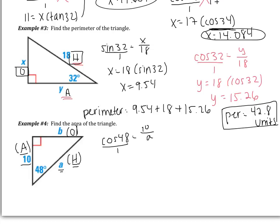And then I put this over 1. I'm going to do my cross products. I get 10 equals A multiplied by cosine of 48. So A is going to be 10 over cosine of 48. In this case, I find A to be 14.94.